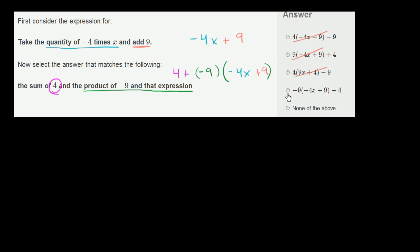This one has negative 9 being multiplied by negative 4x plus 9, and then we are adding 4. All you have to do is go from this expression to this expression — instead of adding the 4 there, you add the 4 here, and then these two are identical expressions. So we will go with this one right over here.